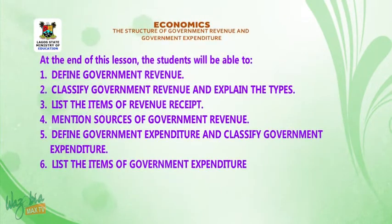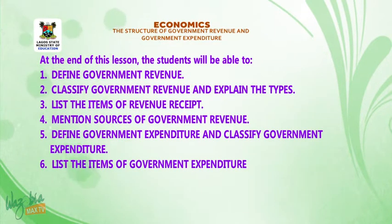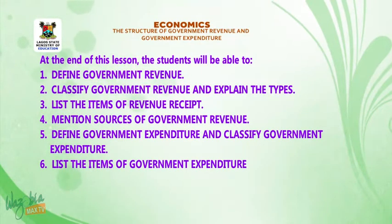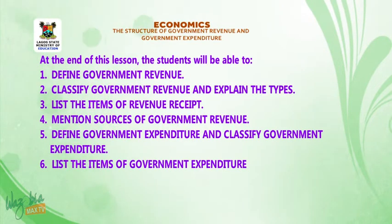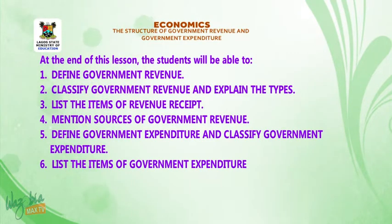At the end of this lesson, the student will be able to: 1. Define government revenue. 2. Classify government revenue and explain the types. 3. List the items of revenue receipts. 4. Mention sources of government revenue. 5. Define government expenditure and classify government expenditure. 6. List the items of government expenditure.